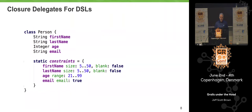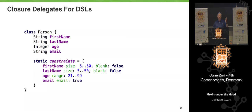All over Grails there are DSLs for lots of things. One example: in a Grails domain class you can declare a static 'constraints' property and assign it a closure. Inside that closure is really a DSL — it's a language for describing what are valid values for these properties. We've expressed that firstName and lastName each have at least 5 and no more than 50 characters, can't be blank, age has to be in the range 21-99, and the email address has to look like a valid email address.